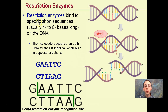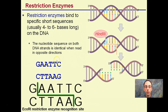Restriction enzymes bind to specific short sequences, only four to six bases long in a DNA sequence. What's interesting is that the nucleotide sequence in both DNA strands is identical when read in opposite directions. So you can see here a G-A-A-T-T-C — it reads the same in opposite directions.